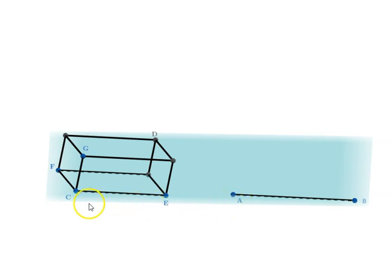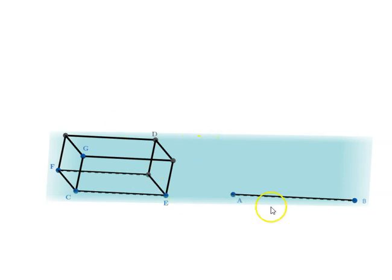First, we copy the solid angle at C — contained by CE, CG, and CF — to point A. We have already seen how to make a copy of the solid angle at a given point on a straight line, so I will take a shortcut and construct it without going step by step. For that, please refer to the previous proposition.